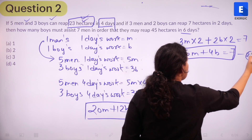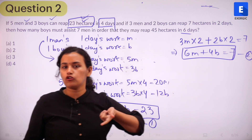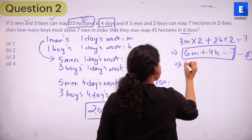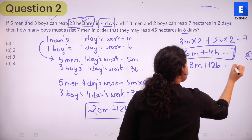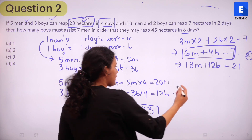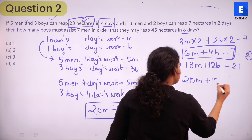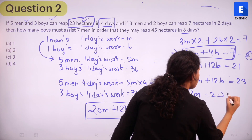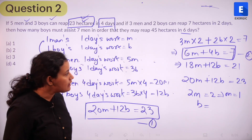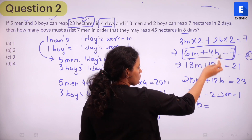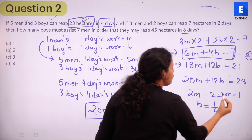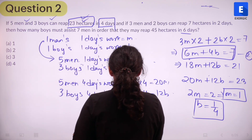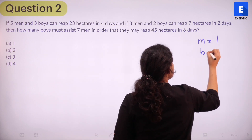Now we solve the two simultaneous equations: 20M + 12B = 23 and 6M + 4B = 7. Multiplying the second equation by 3 gives 18M + 12B = 21. Subtracting from the first equation: 2M = 2, so M = 1. Substituting back, 7 − 6 = 1 = 4B, so B = 1/4. Therefore M = 1 and B = 1/4.